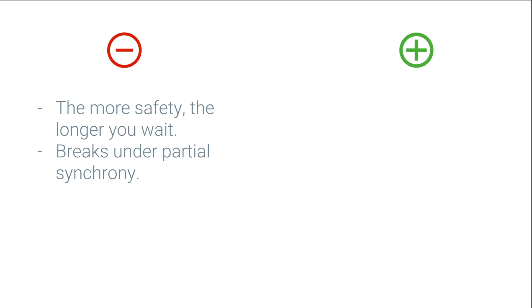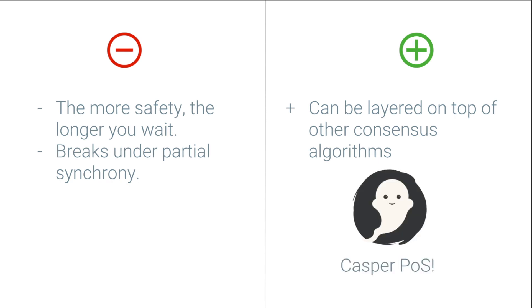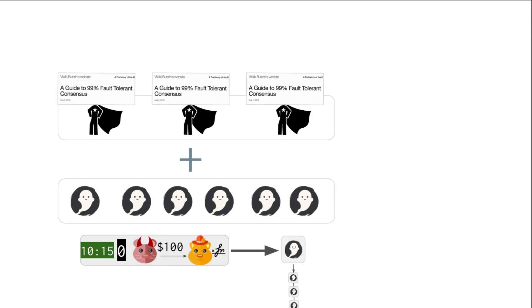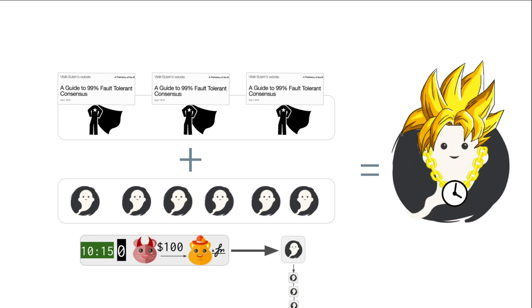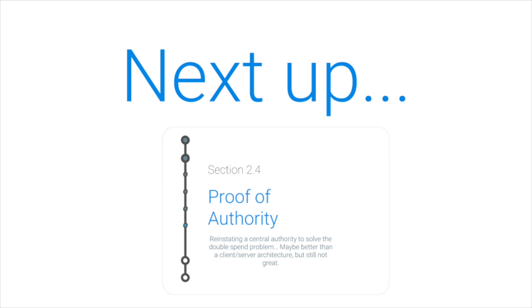Notice that the more safety we want, the longer we have to wait. And this also breaks under partial synchrony. However, it can be layered on top of other consensus algorithms that don't break under partial synchrony — like Casper proof-of-stake, for instance. We can take this 99% fault-tolerant consensus, layer it on top of Casper, replace transactions with Casper-finalized blocks, and get some kind of super Casper. That's something we'll talk about later when we get into proof-of-stake or proof-of-work. Next up, we're going to talk about the simplest of protocols: proof-of-authority.